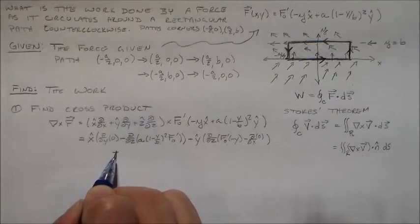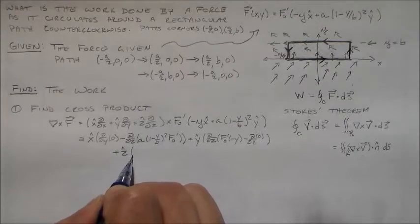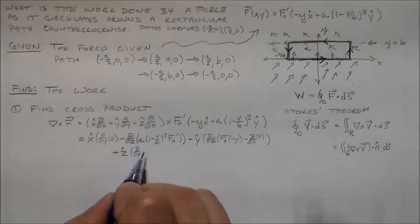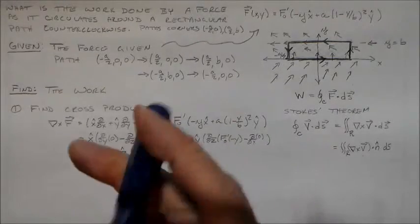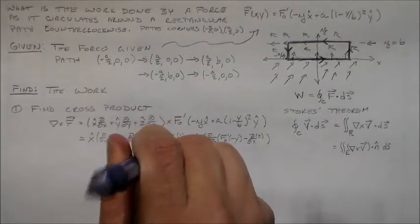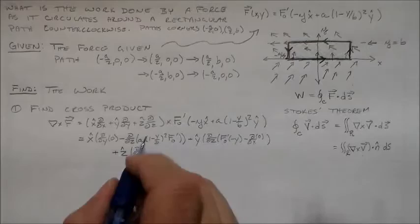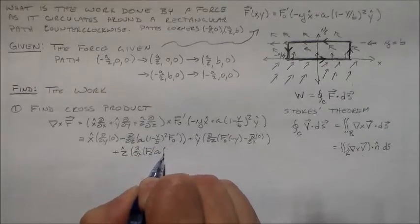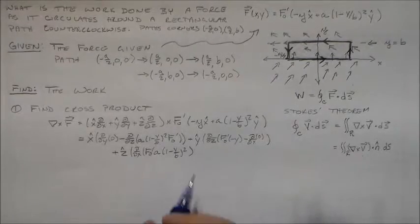Then we minus, subtract d/dy of, what would we call this thing? minus y times f naught prime. Alright. So, the derivative of zero is zero. The derivative of something, the z derivative of something with no z dependence is zero.